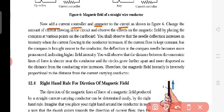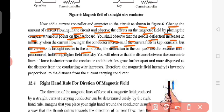The magnetic lines depends also on the distance - distance of the magnetic compass - and the second one, it depends upon the current flow. Now add a current controller and omit it to the circuit as shown in the figure. Change the amount of current flowing. Decrease the current flowing in the circuit and observe the effects on the magnetic field by placing the compass at various points on the cardboard.